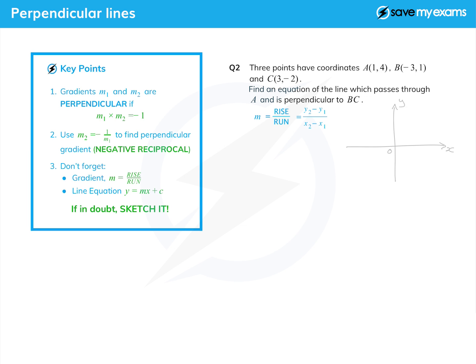Here's a set of axes. We'll very roughly plot A which is (1, 4), that's about there, B which is (-3, 1) so it's going to be about there, and C which is (3, -2) and so that would be roughly there.